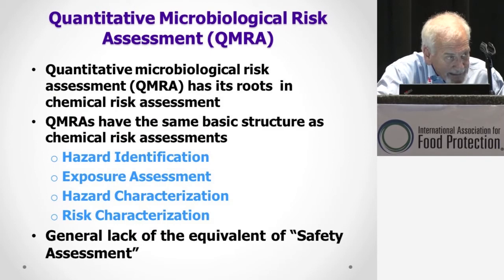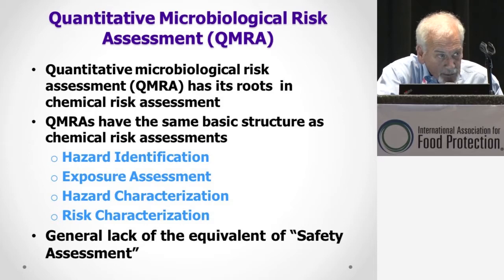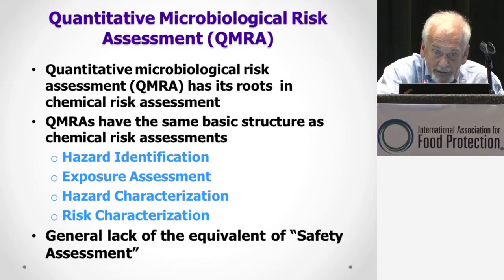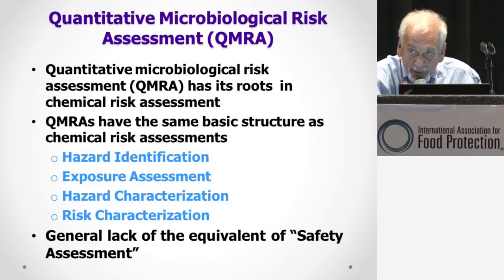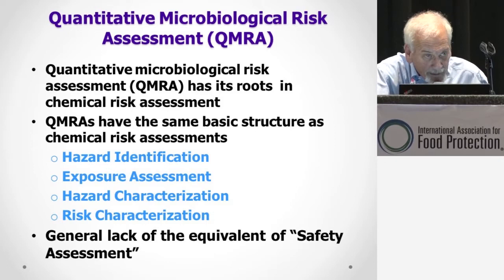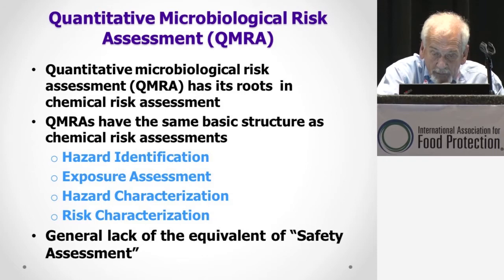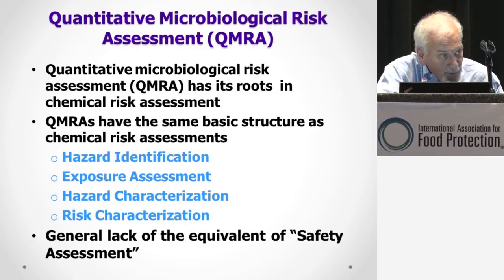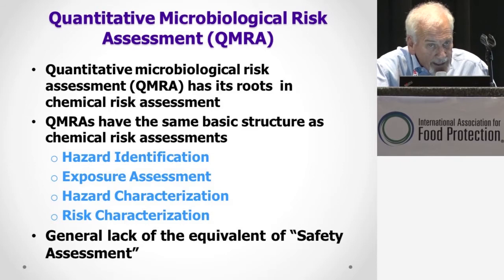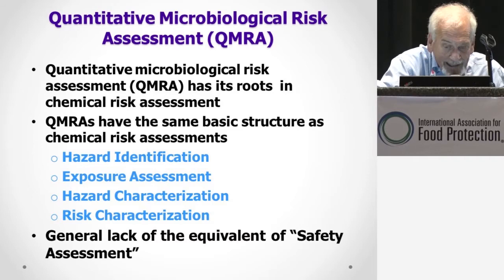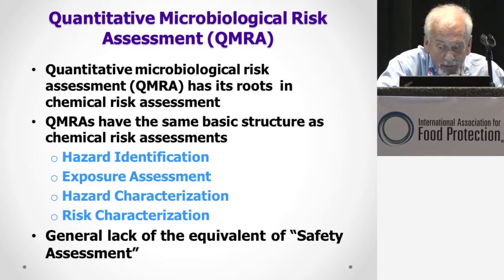In doing microbiological risk assessments, particularly quantitative ones, we built on what we knew from the chemical risk assessment era. Many of the original players in microbial risk assessments were trained as food safety people — a combination of microbiology and toxicology. We basically took the same format of hazard identification, exposure assessment, hazard characterization — which is largely dose-response evaluations — and then finally a risk characterization. What did not carry over is that there is a general lack of use of safety assessments, and I will explain where safety assessments can and cannot be used in microbial risk assessment.